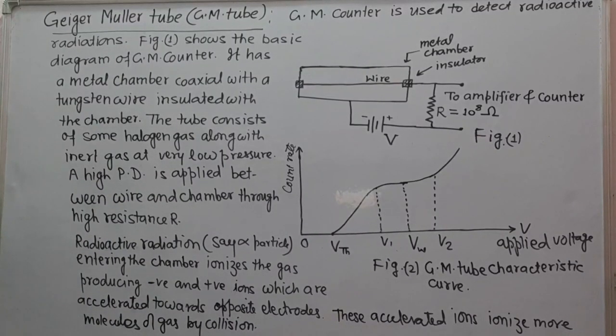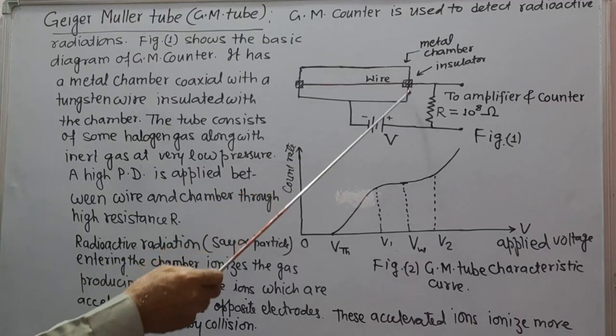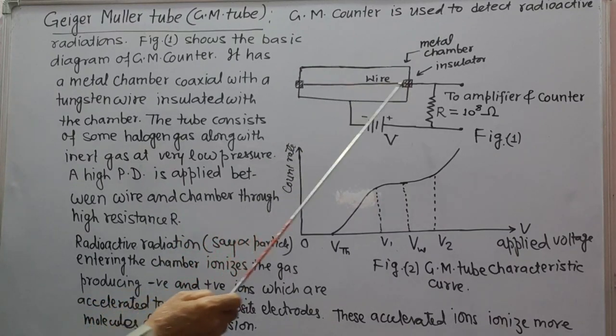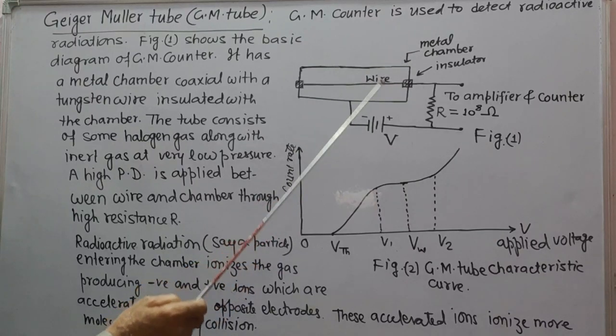Next we take GM counter, which is Geiger-Muller counter. GM counter is used to detect radioactive radiations. Figure 1 shows the basic diagram of a GM counter.